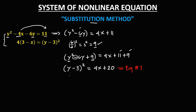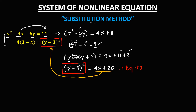Observe that from equation number 1, we have y minus 3 quantity to the power 2, and in equation number 2 we also have y minus 3 quantity to the power 2. So therefore, we can substitute 4x plus 20 into equation number 2, because y minus 3 quantity squared equals 4x plus 20.